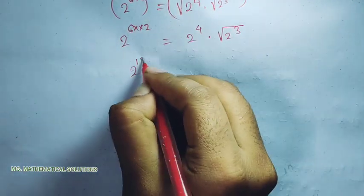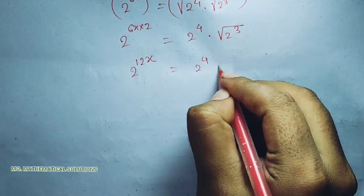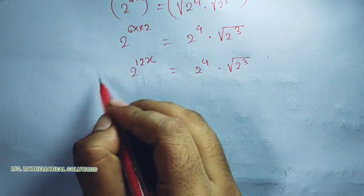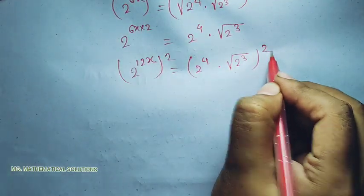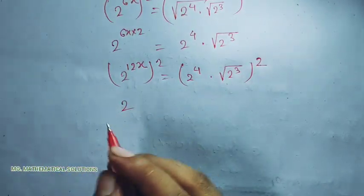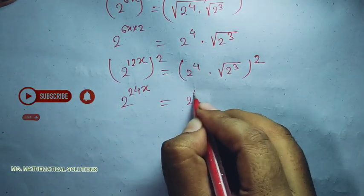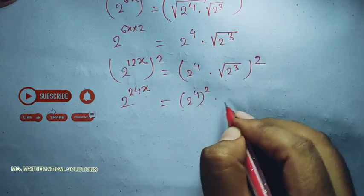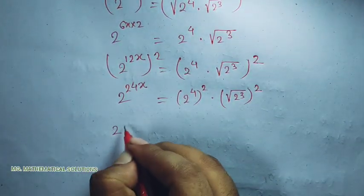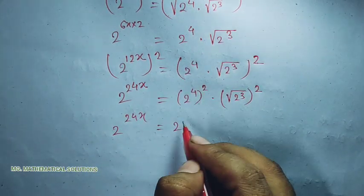So 2 to the power 12x equals 2 to the power 4 times root of 2 cubed. Now squaring both sides again, using the same formula: 2 to the power 24x equals 2 to the power 4 whole squared, times root of 2 cubed whole squared. So 2 to the power 24x equals 2 to the power 8 times 2 to the power 3.